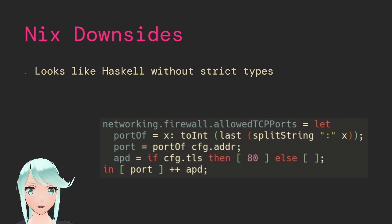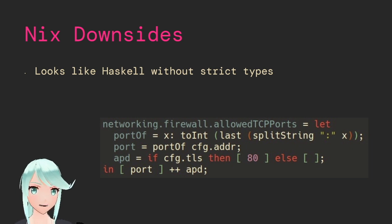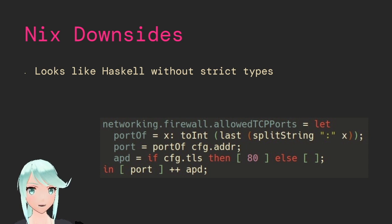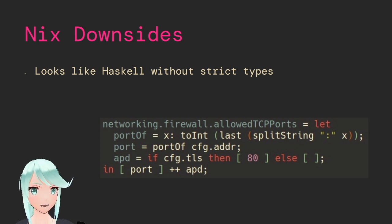Nix, the language, can look a bit like a combination of Haskell and Bash in ways that are kind of deceiving to people that don't have solid experience with Haskell or other functional programming languages. This is a little bit of code that breaks a host:port thing into just the port number so you can add it to a firewall rule, and also checks if you have TLS enabled with HTTP certification for Let's Encrypt and adds port 80. But without familiarity with functional languages and without the 14-plus lines of comments explaining what's going on, it's going to be difficult to understand.